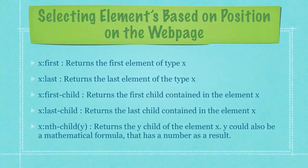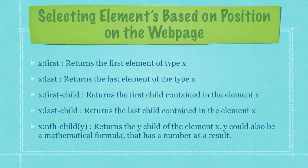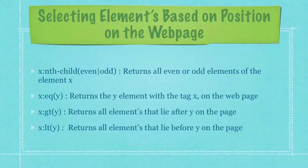Here I'm going to show you how to select elements based on position on the web page. This code inside a jQuery selector will return the first element of type X. The second will return the last element of type X. The third will return the first child contained in the element X, and the fourth will return the last child. You can also return the Y child of element X, where Y could be a mathematical formula. The first bullet returns all even or odd elements of X, the second returns the Y element with tag X, and the third returns all elements that lie after Y on the web page.